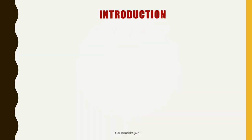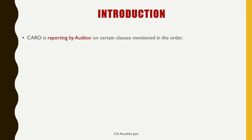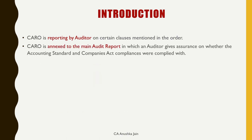Pahle briefly jaante hain what CARO is and why it is needed. According to Section 143 subsection 11 of Companies Act 2013, Central Government order issue kar sakti hai jisse voh kuch specified companies ki auditors report mein kuch specified matters par auditor ke comment le sakay. Accordingly, auditors in matters par comment karte hain through clauses mentioned in CARO. Isse main auditor's report ke saath annexed kiya jata hai.